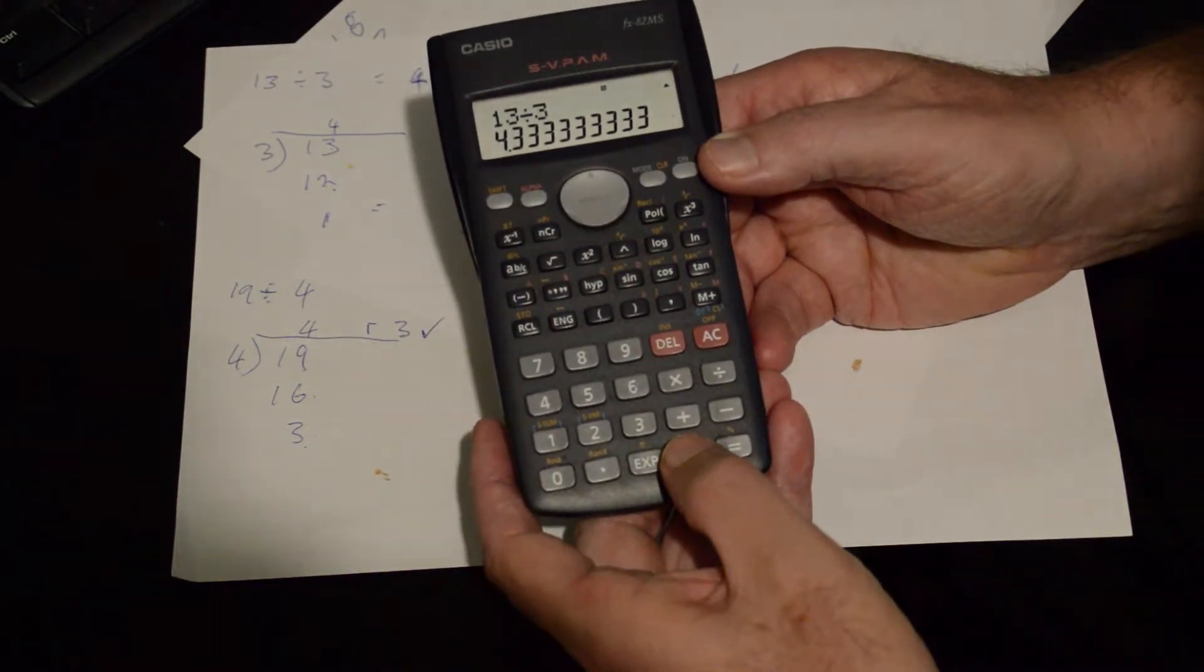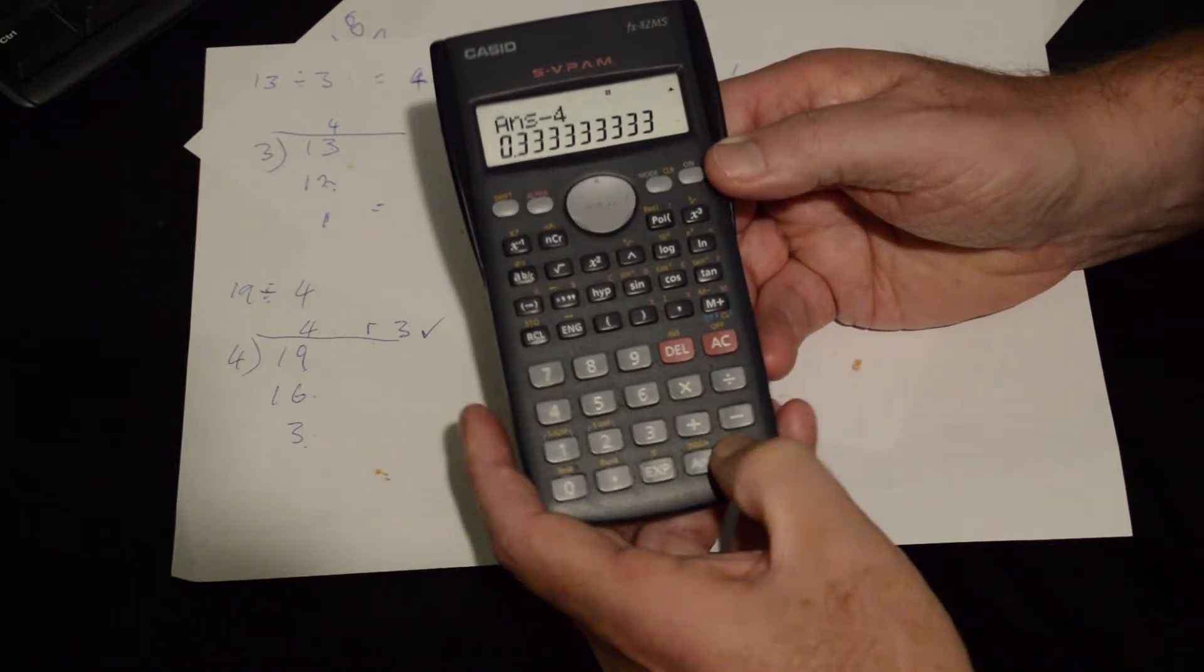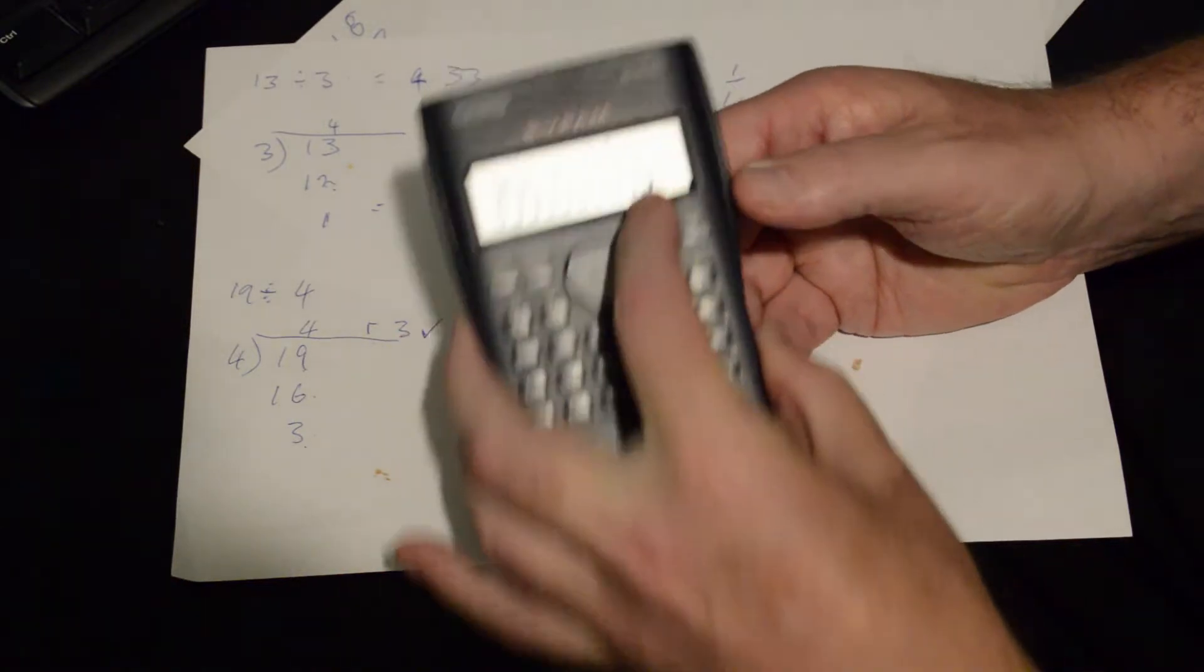So we press the answer button down here and we go minus 4 equals. So now we've got 0.333 repeat.